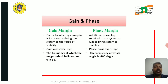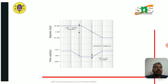Gain margin is the factor by which the system gain is increased to bring the system to the verge of stability. Phase margin is the additional phase lag required to be added to the system at ωgc to bring the system to the verge of stability. The gain crossover frequency is where the magnitude equals 1 (linear) or 0 dB, and the phase crossover frequency is where the phase angle equals −180°.